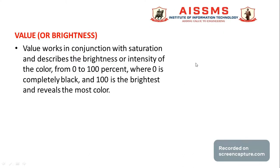The value component works in conjunction with saturation and describes the brightness or intensity of the color, from 0 to 100 percent. Where 0 is completely black and 100 is the brightest, revealing the most color. This is how the brightness of a color is calculated in the HSV model.